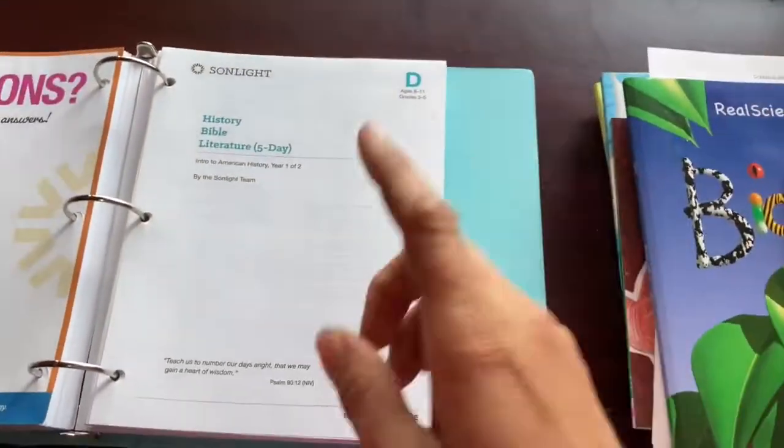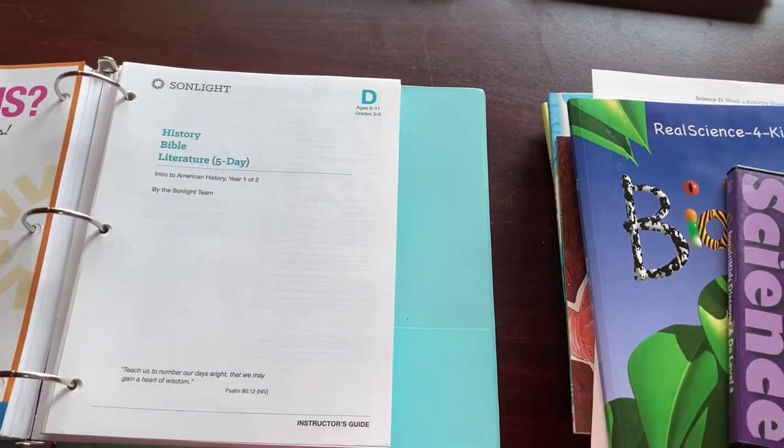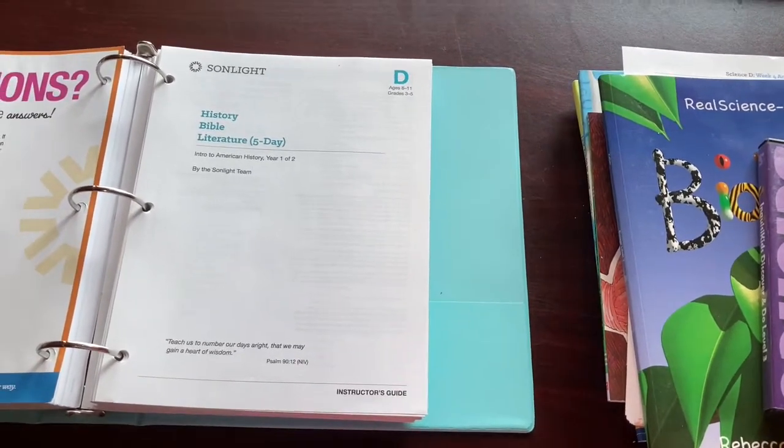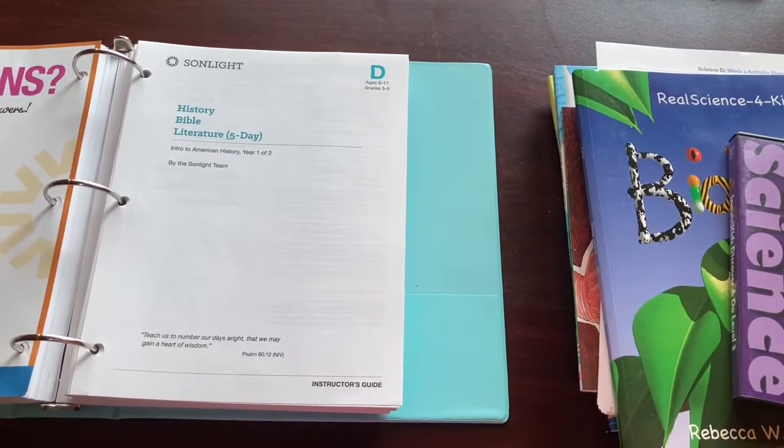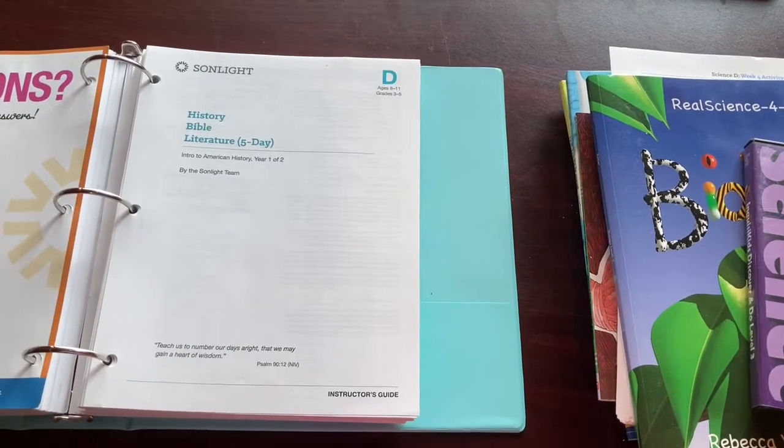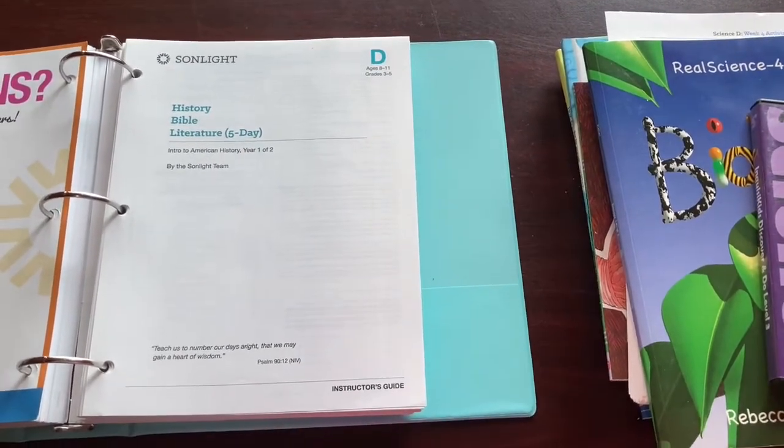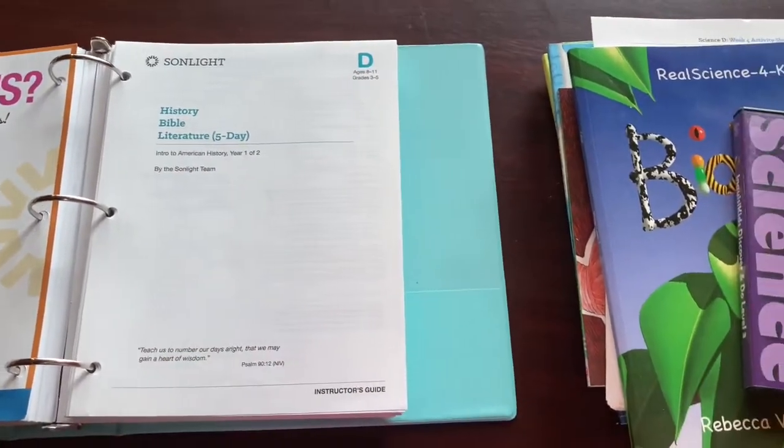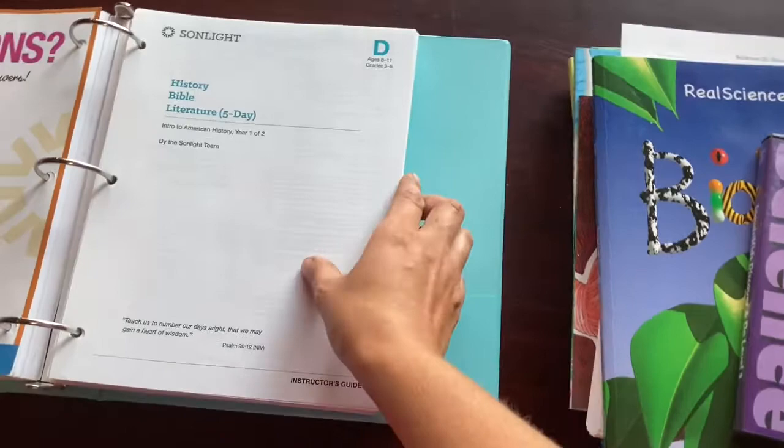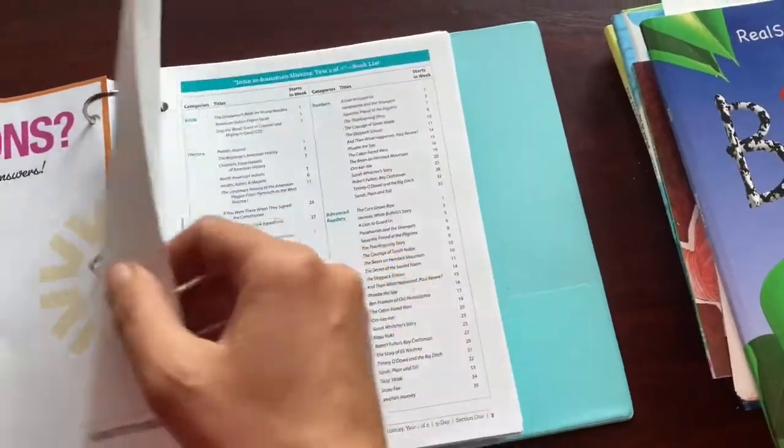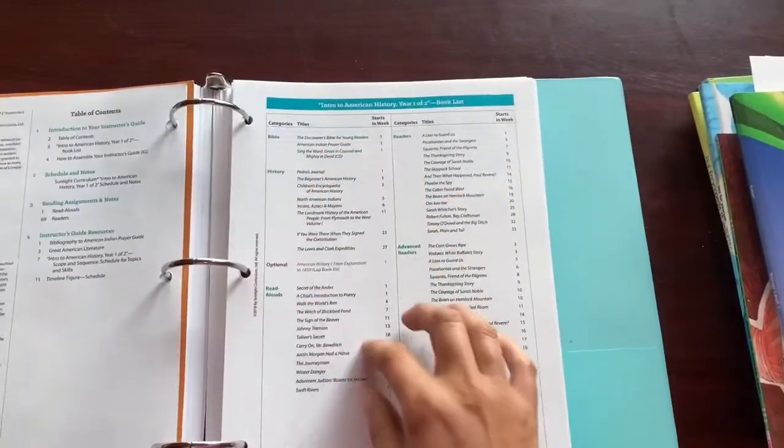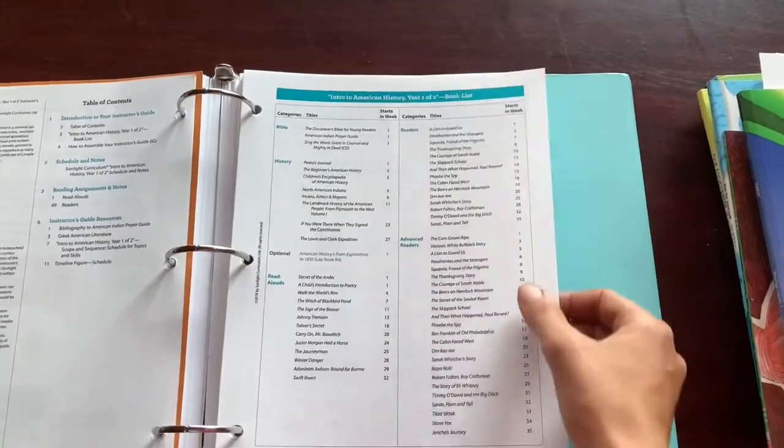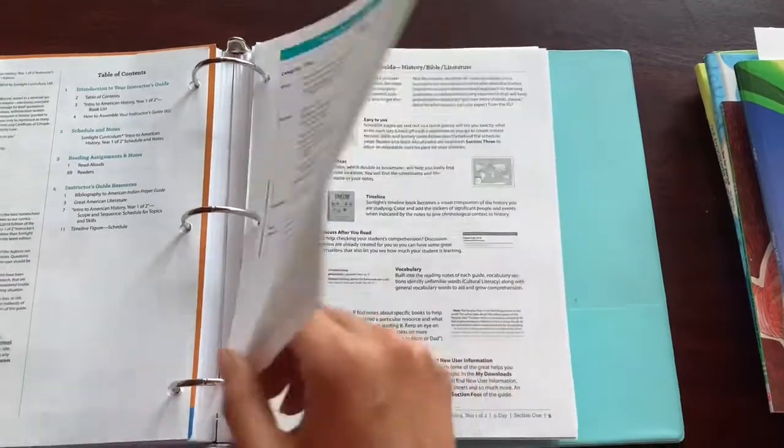We are using Sunlight D for him. He has previously done all of the Sunlight Cores preschool all the way through B, and then we skipped C for this year. We're going to D, and then we'll go back. This is Intro to American History, year one of two. When you order Sunlight, it comes with a list of a bunch of books. It's based on reading living books, not based on workbooks or textbooks at all.